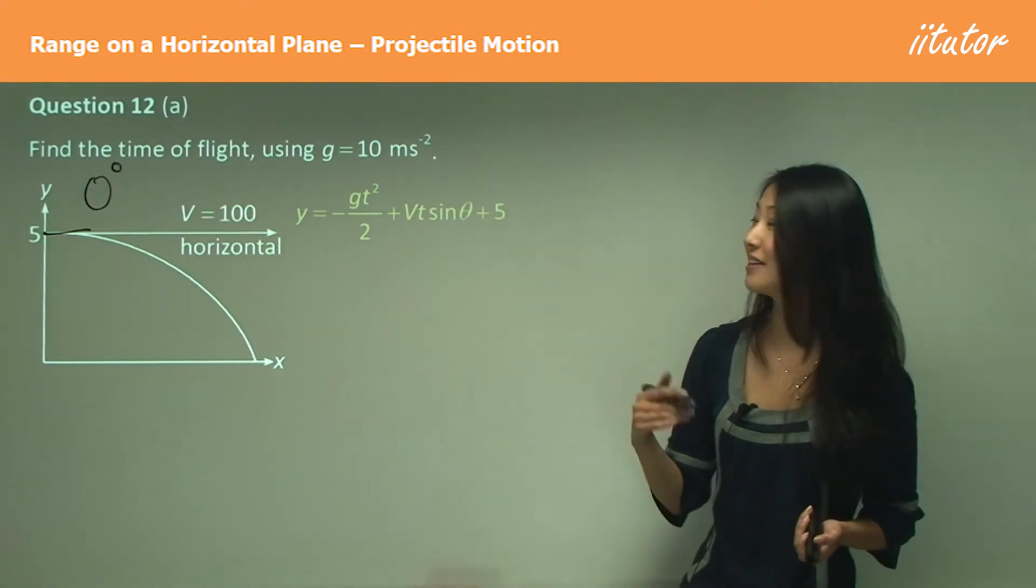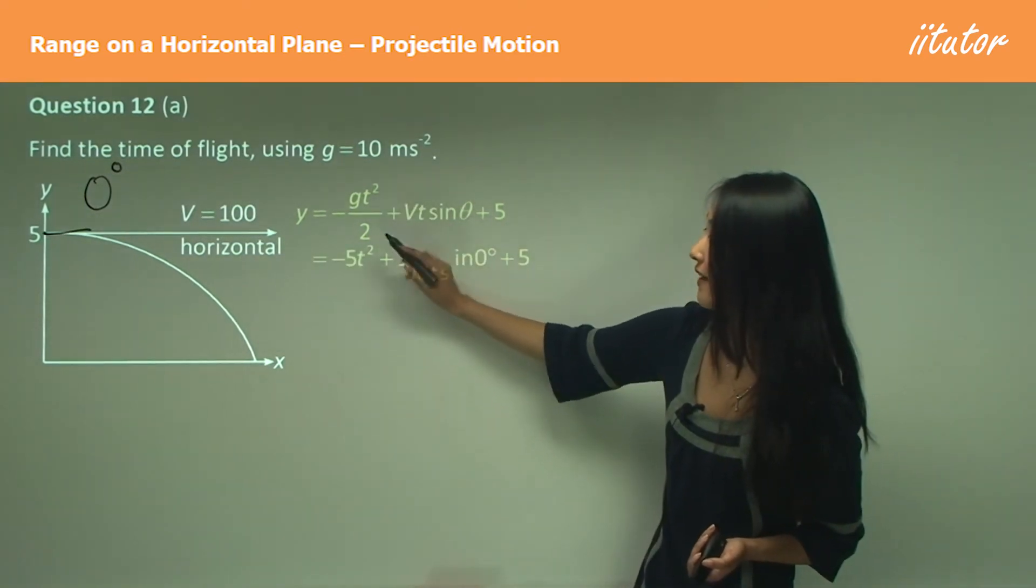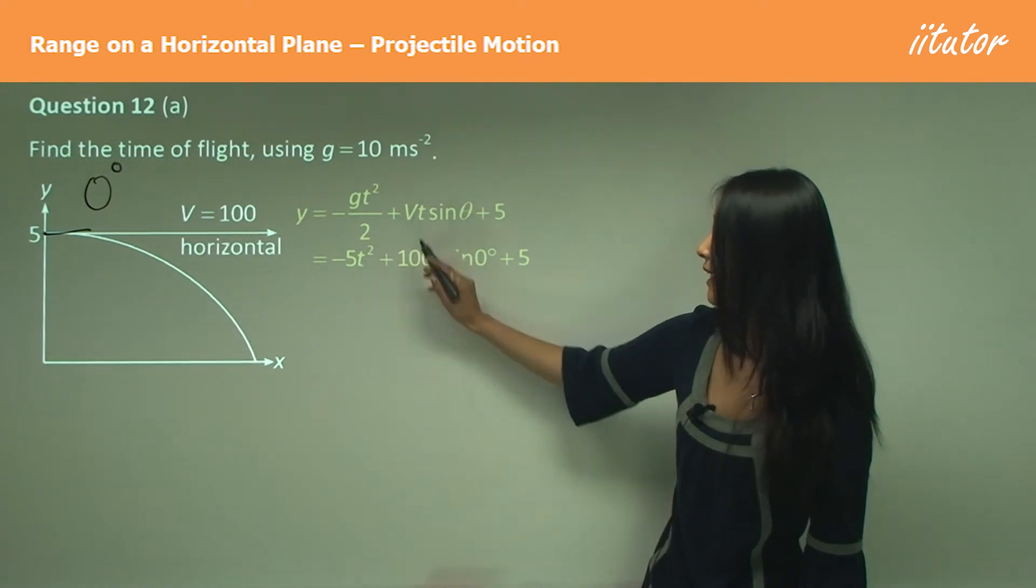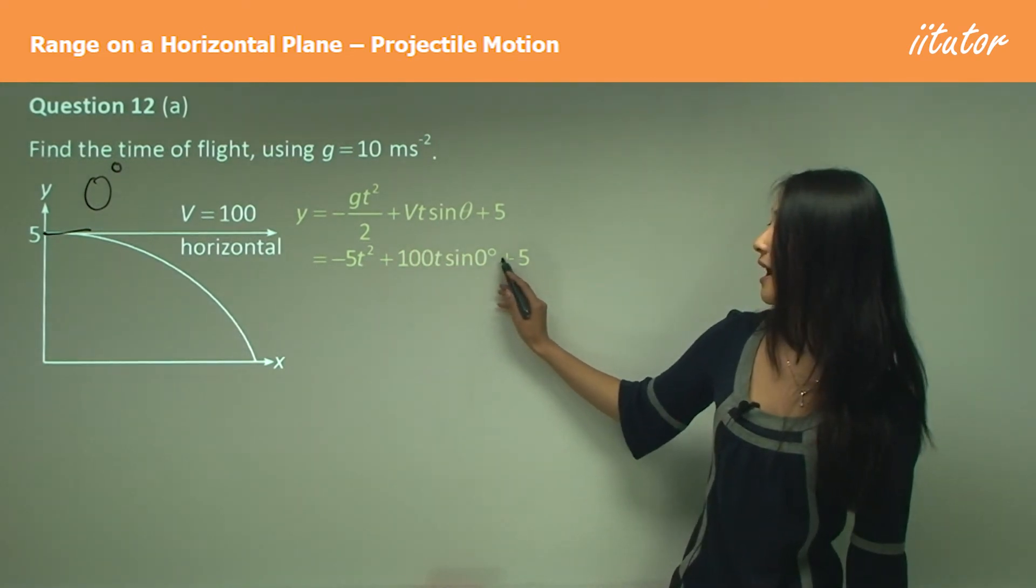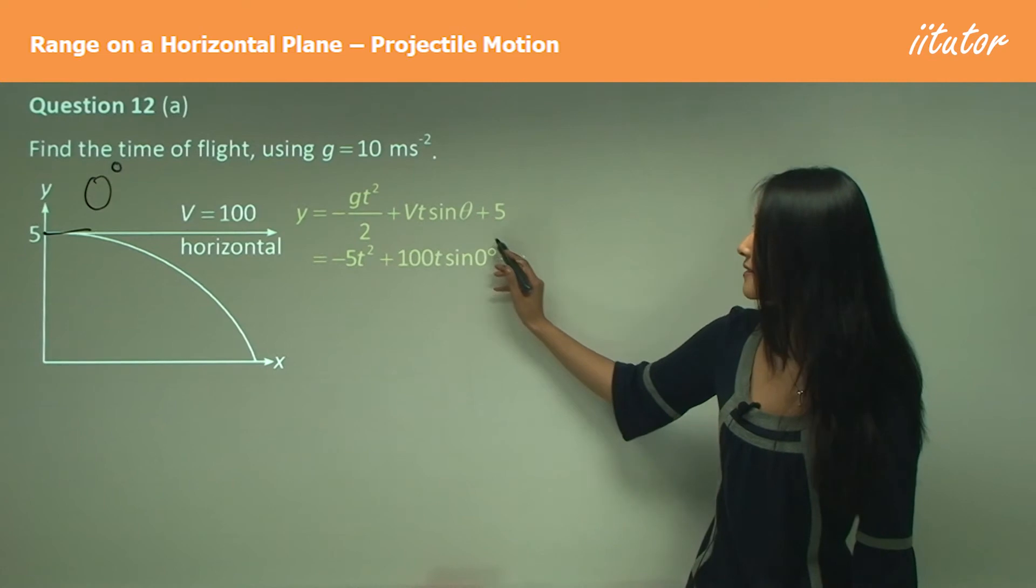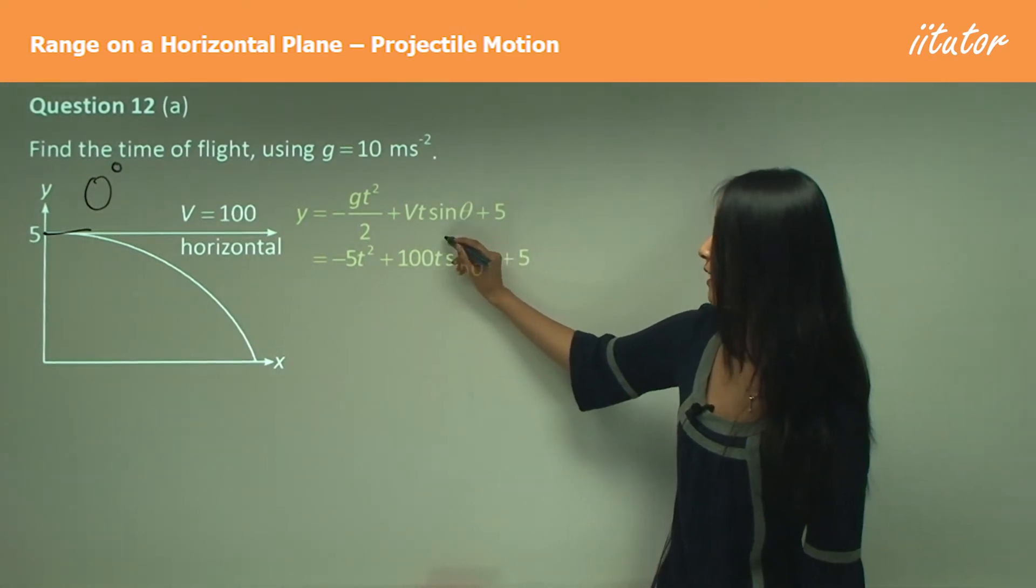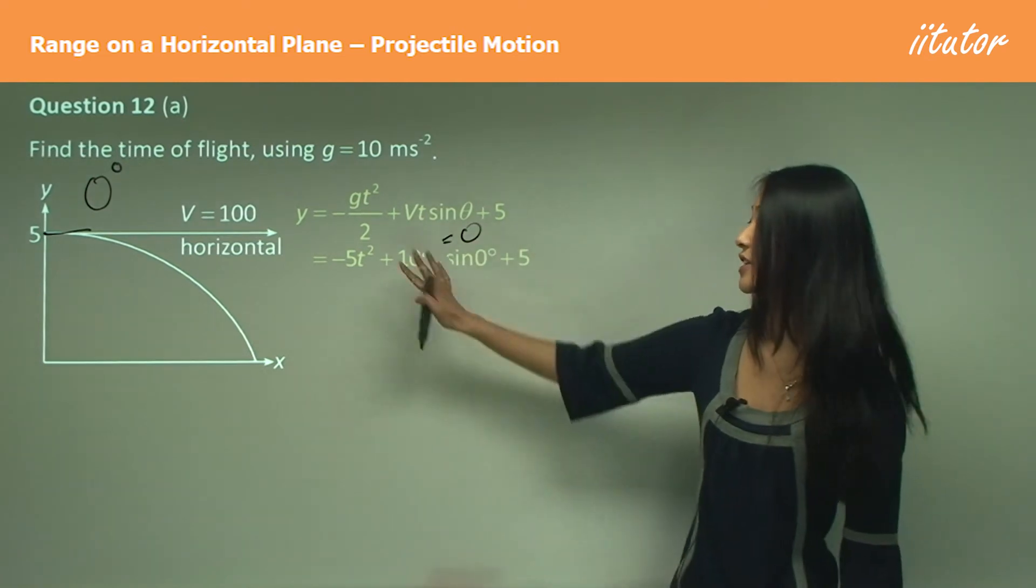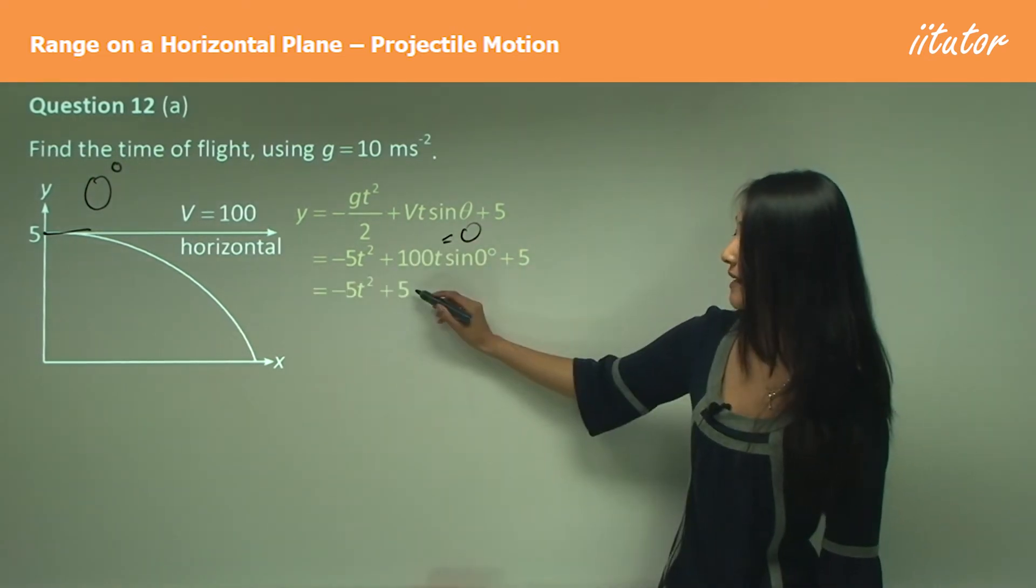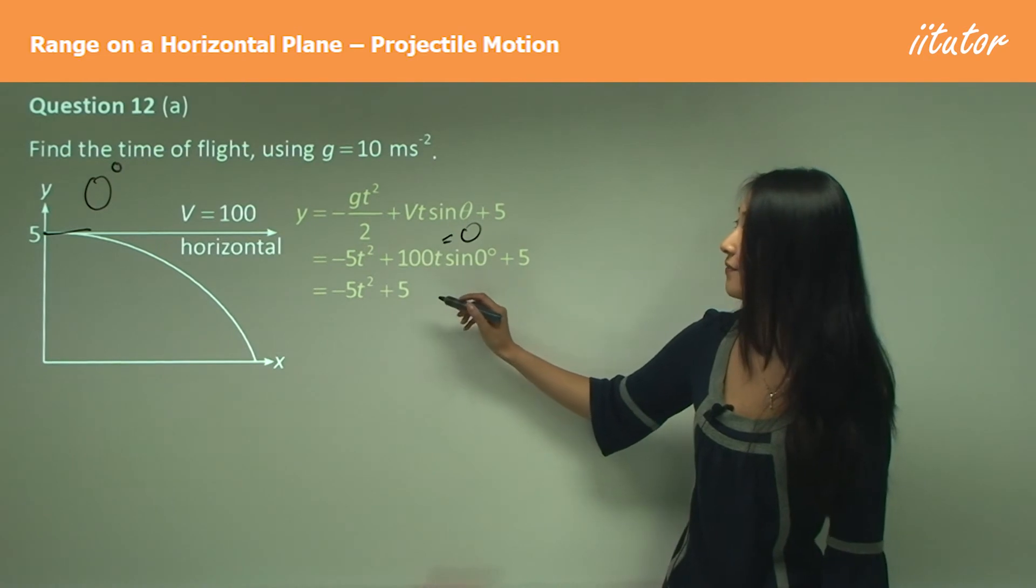Now substituting things in, so g is 10, 10 divided by 2 gives you 5, v is 100 and sine zero degrees. Now sine zero degrees equals to zero, which means this whole thing would equal to zero. So essentially it doesn't exist anymore. So that's why we get negative 5t squared plus five.